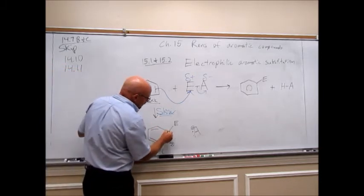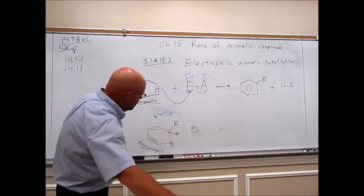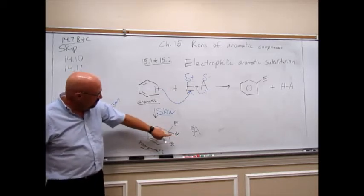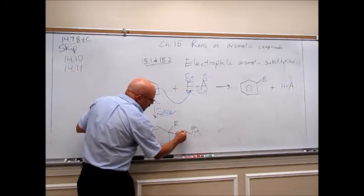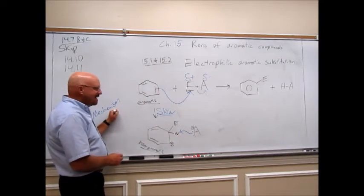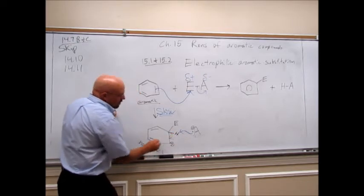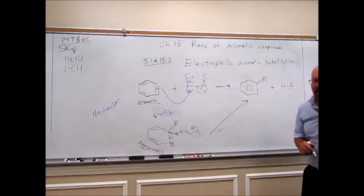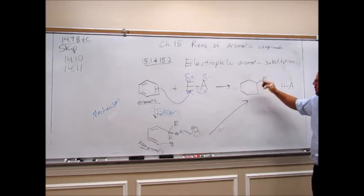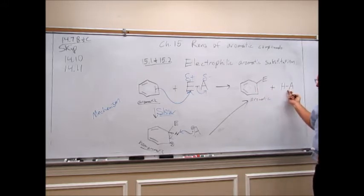To get back to the aromatic ring, we need to grab the hydrogen off of the carbon where we just put the electrophile. That anion is going to grab that hydrogen — this is just an acid-base reaction — and the electrons in that carbon-hydrogen bond kick toward the plus charge and reform the double bond. That gives us our aromatic ring back, and we get an acid as a byproduct.